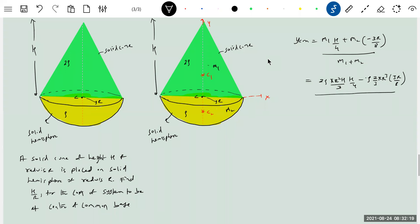Divided by M1 plus M2, ρ π R² H by 3. This should be equal to 0. Why YCM should be 0? Any reason for this?